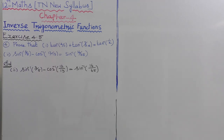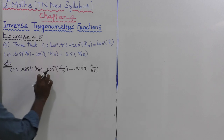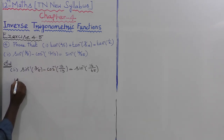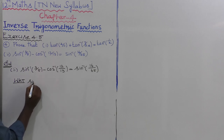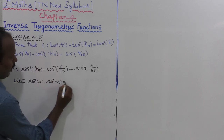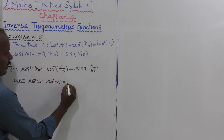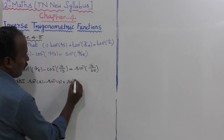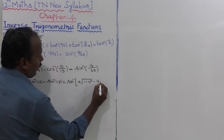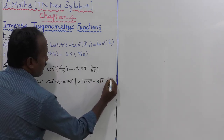So, sin inverse of 3 by 5 minus cos inverse of 12 by 13 — what we need to change the formula? We need to change the formula. So: sin inverse of X plus cos inverse of X minus sin inverse of Y, equal to sin inverse of X into root of 1 minus Y square minus Y into root of 1 minus X square. That is the formula.